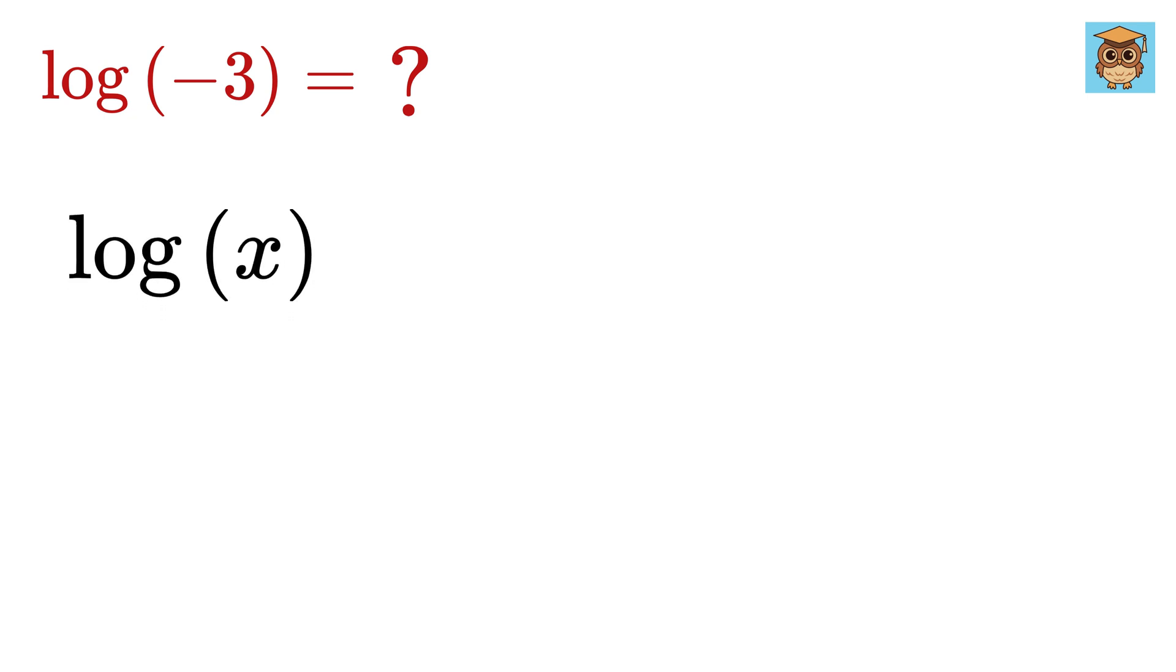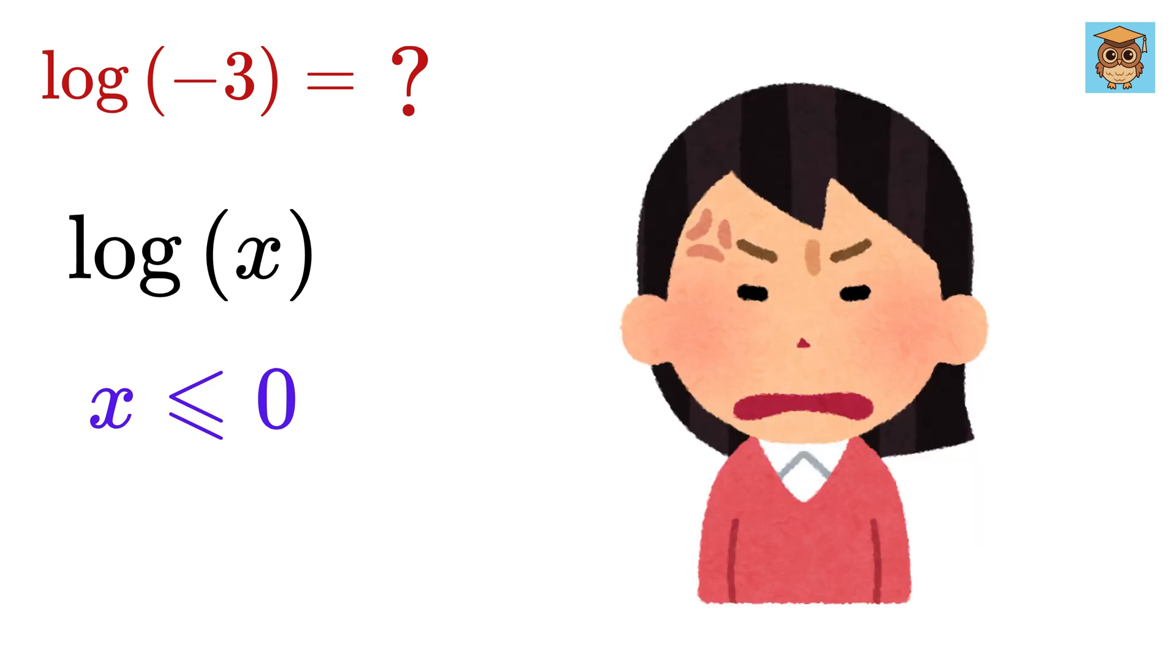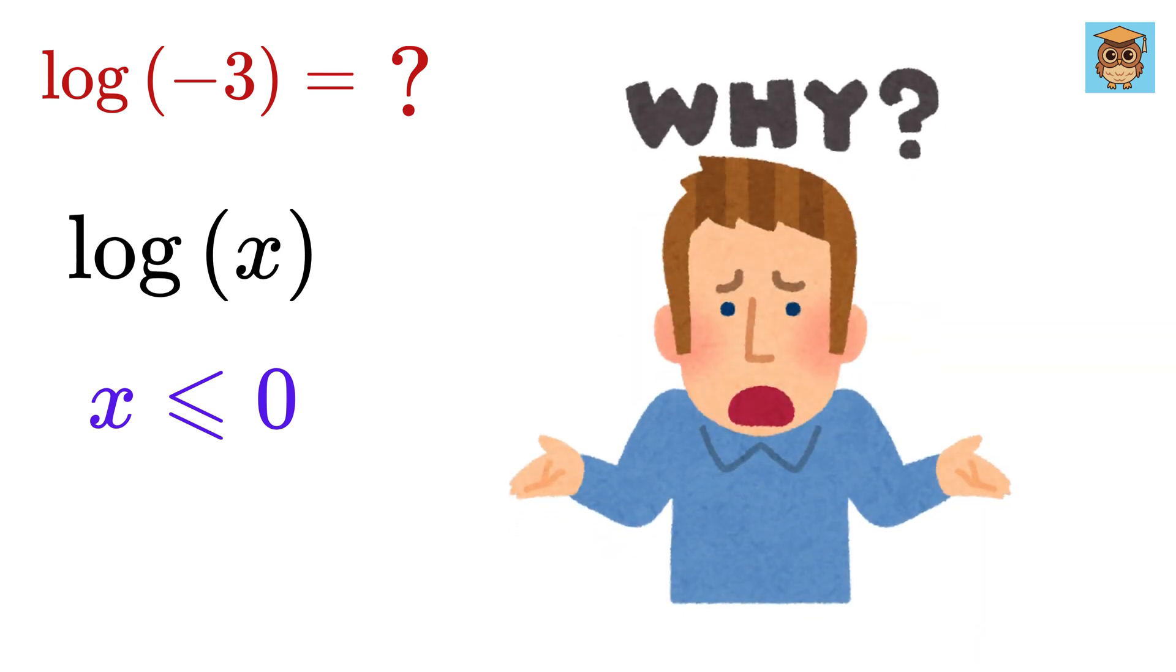We all know that a log of any number less than or equal to zero does not exist, right? Then what the hell is this log of negative 3? Why is this question even asked?